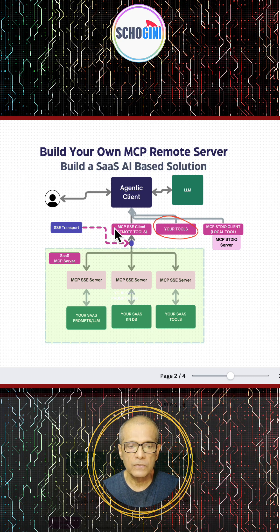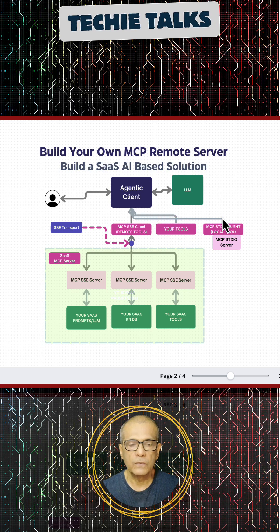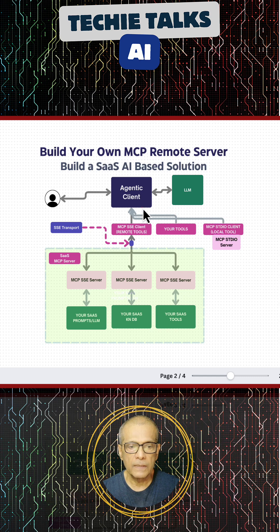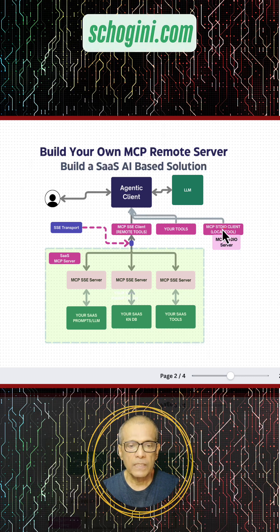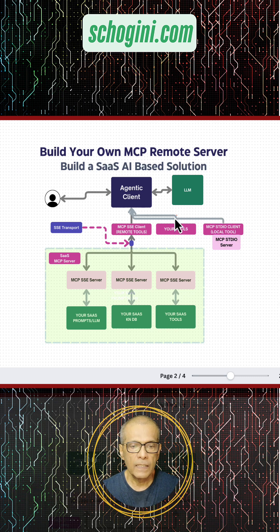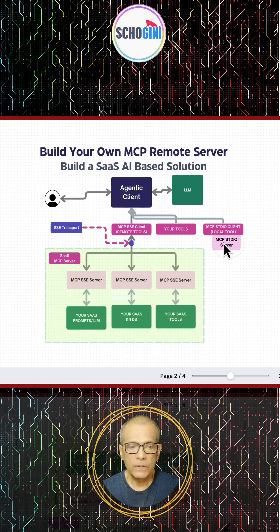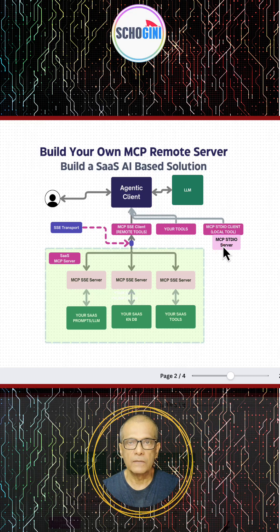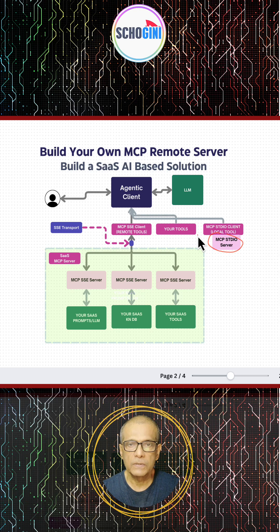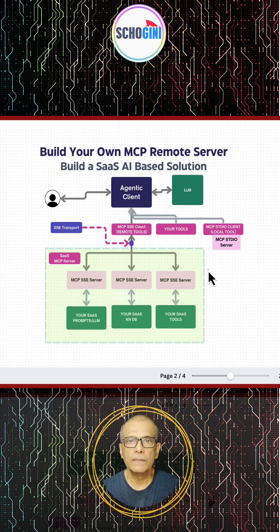Before MCP we could simply attach tools to our agent, but with MCP there are two ways we can attach tools. One is the MCP client sitting on the same machine where the MCP server also sits — the client invokes the MCP server directly and it acts as the tool. But the problem with such a solution is that our intellectual property also stays with our clients. If you do not want to reveal your solution and only offer it as a service, then you need to offer a remote MCP solution.